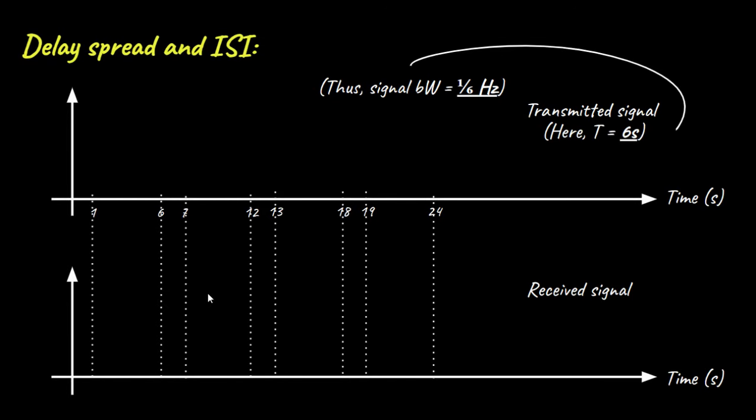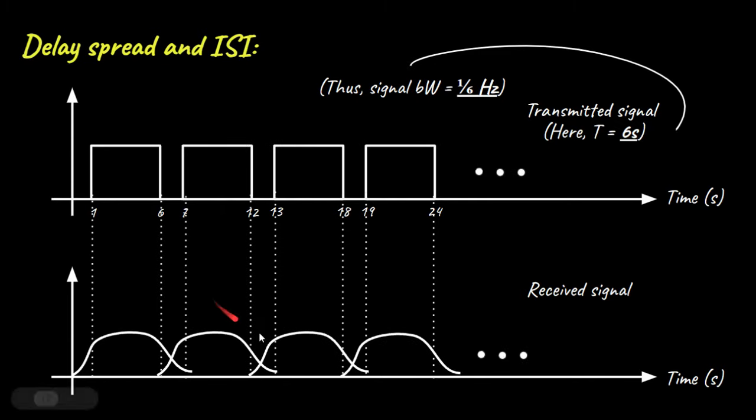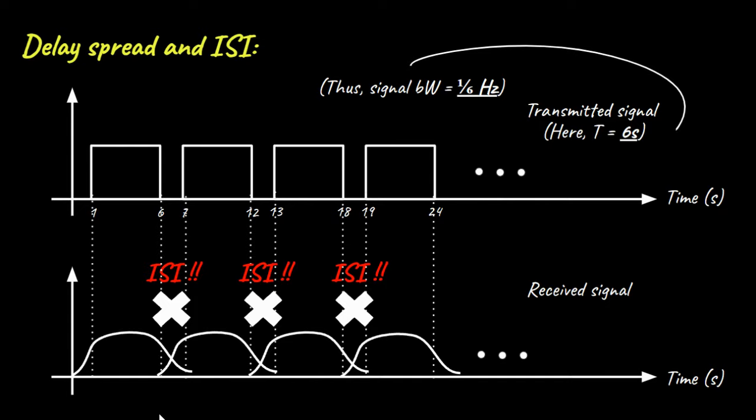Now that we understand the multipath communication channel leads to delay spread in the transmitted signal, let us see how this delay spread leads to what we call inter-symbol interference. So, if subsequent transmitted signals are not spaced enough to counter the delay spread in the channel, the symbols at the receiver end interfere as shown in this figure. This interference is what we call the inter-symbol interference or ISI, and it is undesirable as it can lead to decoding errors at the receiving end. Presence of ISI thus makes communication less reliable.